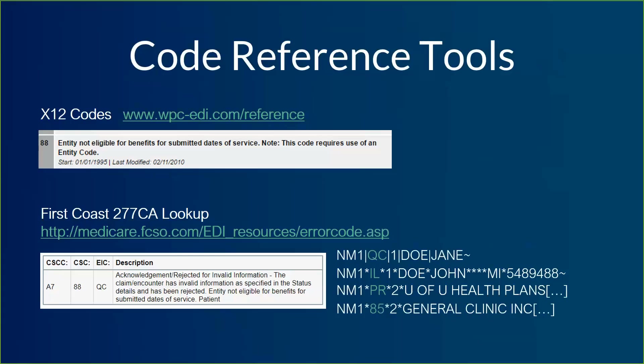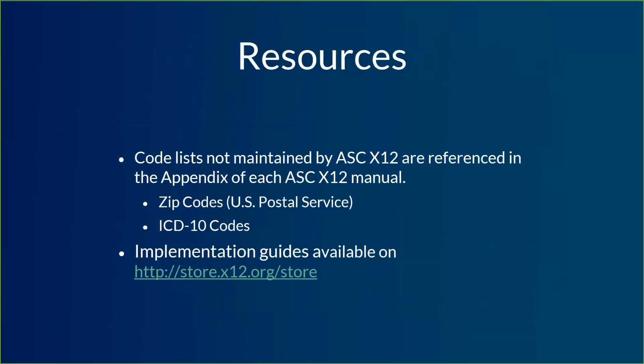For the few times when entity codes don't link up with a qualifier in the original file, that's when the lookup tool is going to come in handy. There are a couple of other code list resources you might need — a lot of them are in the implementation guides themselves. Like place of service — they not only list where it goes, but say here are the different possible place of service code types. There are some code lists that are not maintained by X12 but by other organizations, like zip codes and ICD-10 codes — those are just referenced in the appendix of each manual. If you don't have implementation guides yet and you are doing a lot with X12, I highly recommend getting some — make sure you get one for each type of transaction you're dealing with. You can get them at the X12 store, though you do have to purchase each transaction separately.